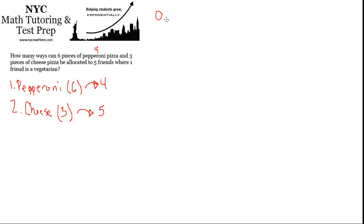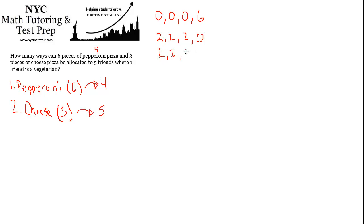How many ways could you give six pieces of pizza to four people? You could give none to the first, second, and third person, and give it all to the fourth. That's one way — not very fair. You could give all six to any of the four people. You could also split it evenly: two, two, two, and none for the last person, or two, two, one, one. But it's going to be hard to list every possible way; there's an extremely large number.